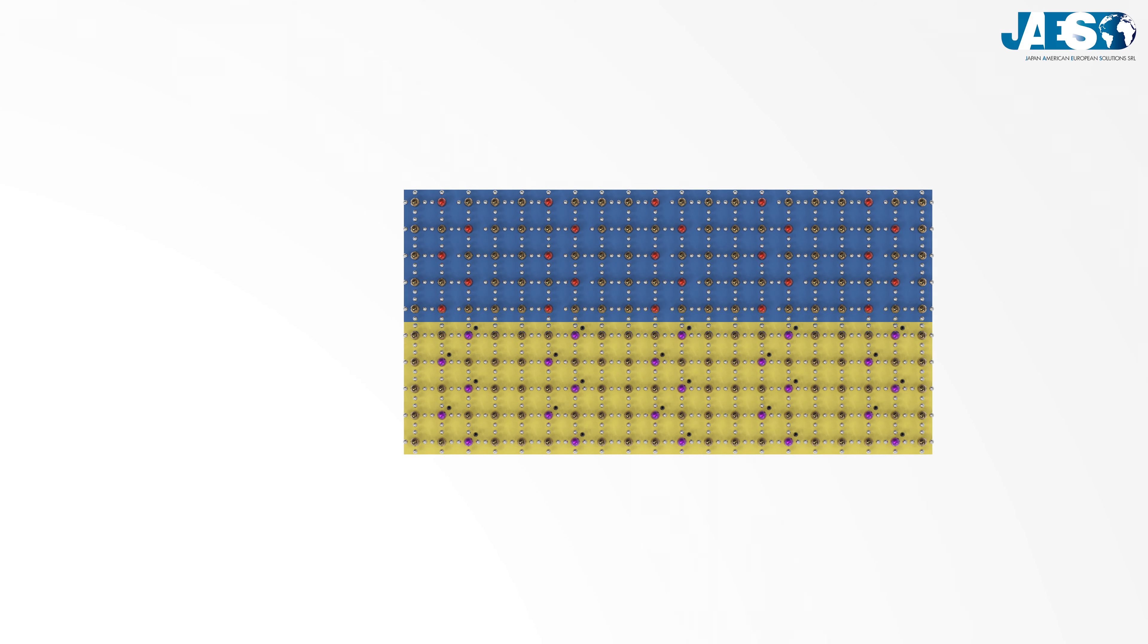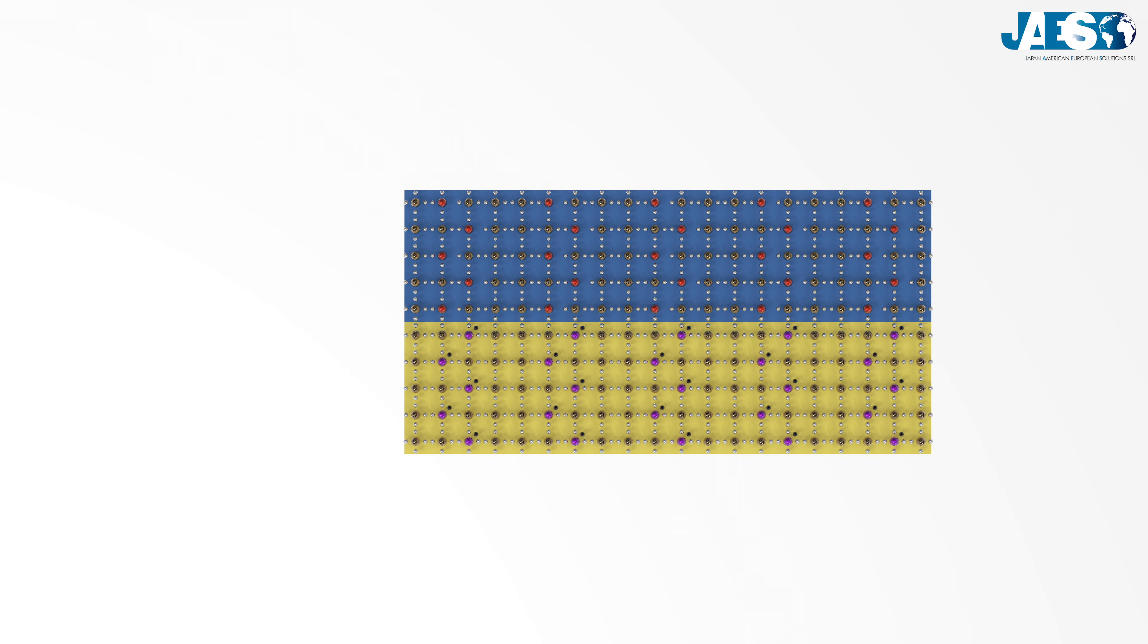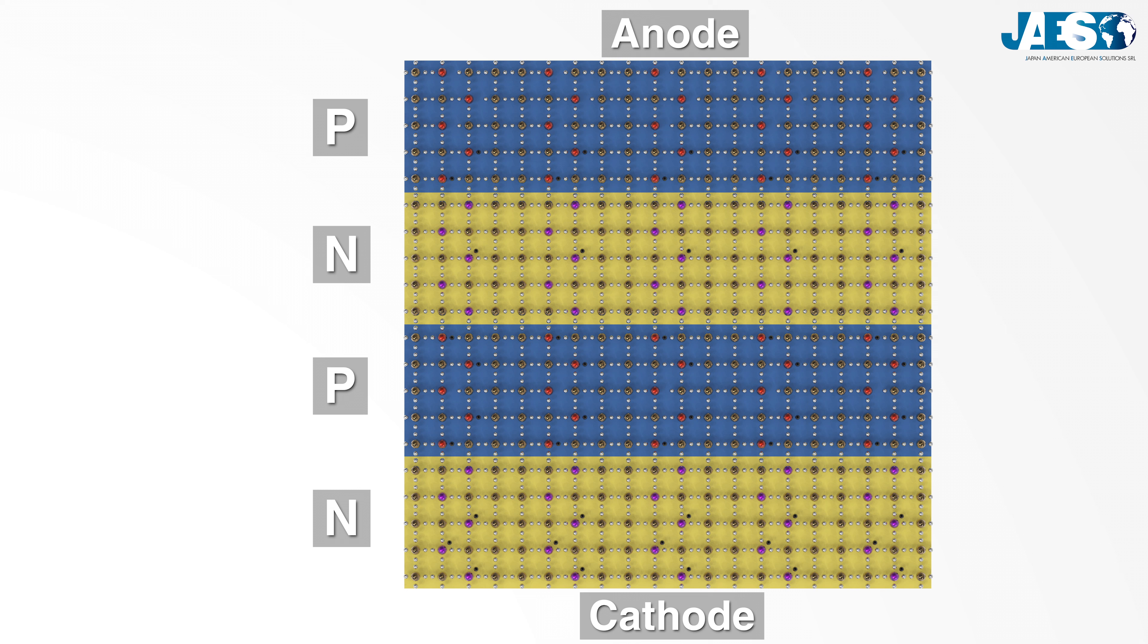The thyristor differs from the diode in having four layers of alternating semiconductor wafers in the P-N-P-N configuration, which forms three depletion regions, where the anode is the outer P layer, the cathode is the opposite N layer, and the so-called gate, which is to be found at the end of the intermediate P semiconductor.